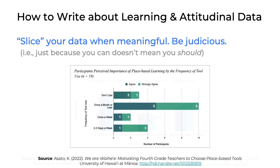Here's another example showing participants' perceived importance of place-based learning by the frequency of tool use. We can see clearly labeled x and y axes. However, layered on top of that are two categories — agree or strongly agree — indicating whether the participants agreed or strongly agreed that place-based learning is important. This is an example of slicing attitudinal data, sense of importance, by tool use and level of agreement.